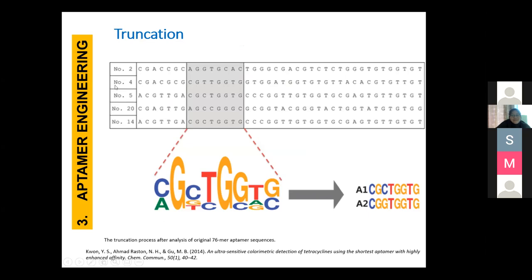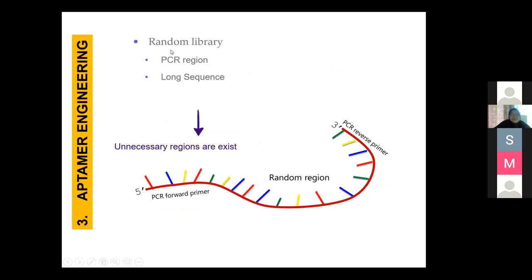Aptamers have quite long unnecessary regions — the known primer sequences. So we can do aptamer engineering, called truncation. For vaspin, I haven't run the truncation experiment yet, but I did for small molecule cases — for tetracycline antibiotics including tetracycline, oxytetracycline, and doxycycline. The unnecessary regions are the forward primer and reverse primer regions. The purpose of engineering is to find the core sequence and remove the unnecessary region, in order to enhance the affinity of the aptamer and increase the sensitivity of the aptasensor.